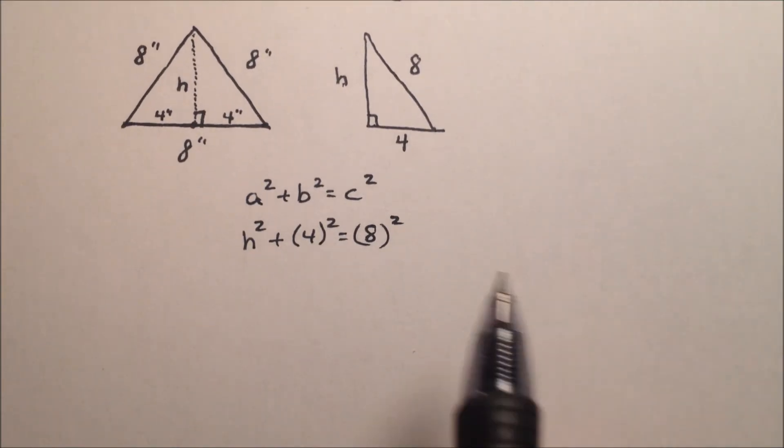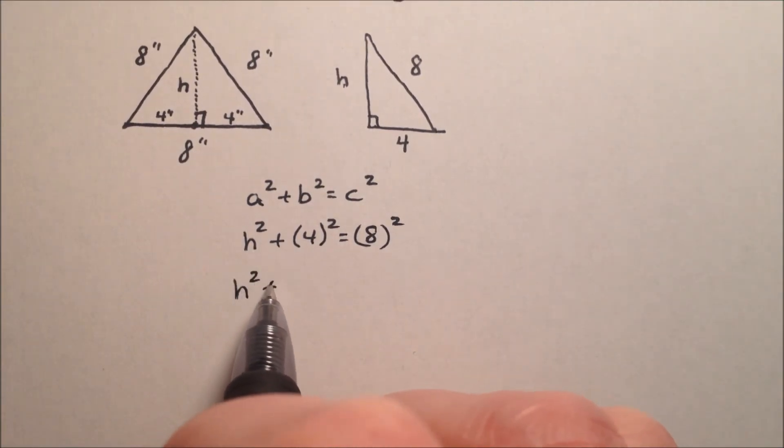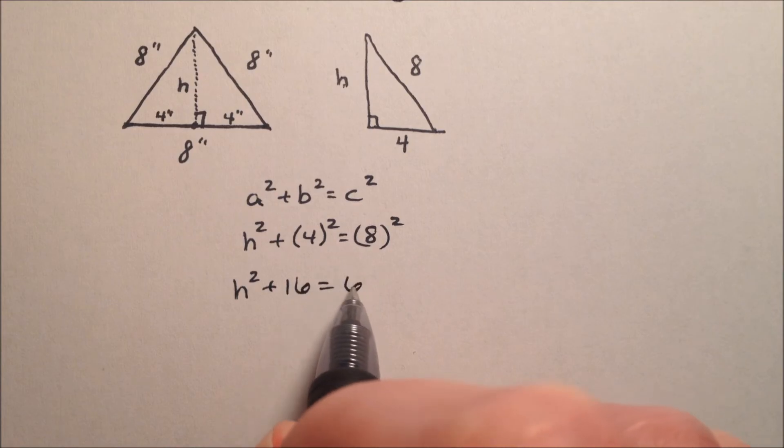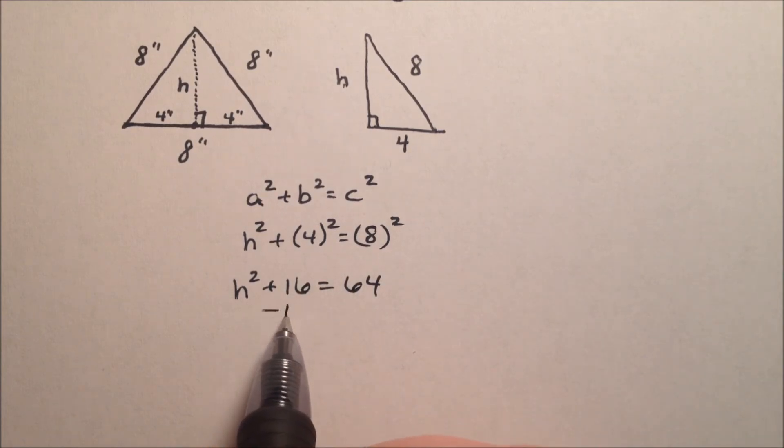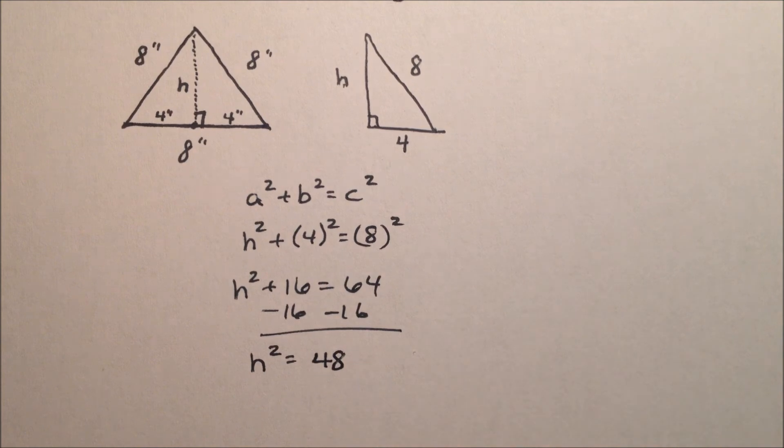Okay? Well, let's go ahead and just simplify all of these. H² + 16 = 64. Okay? So when I subtract 16 from both sides, I'm going to get h² equals, and that should be 48. So since we have it squared, I will take the square root of both sides, and the square and the square root will cancel each other out. So it'll just be H equals the square root of 48.